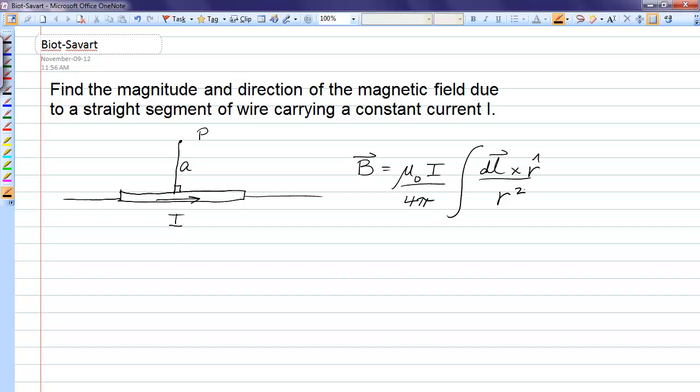In order to use that equation you need to know what all these quantities are in this integral. So dl is a little element of the wire pointing in the direction of the current. r is the distance from dl up to the point of interest, and r-hat is a unit vector that lies along r.